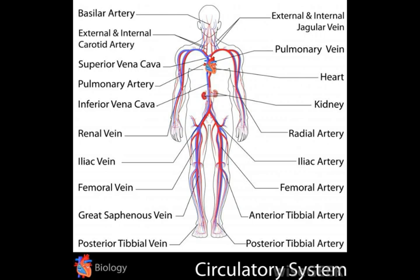Named after the 17th century English physician who discovered it, the circle of Willis is a circular network of arteries responsible for transporting blood to the brain. It is made up of the anterior cerebral and anterior communicating arteries located at the front, the internal carotid artery located in the middle, and the posterior cerebral and posterior communicating arteries at the back.